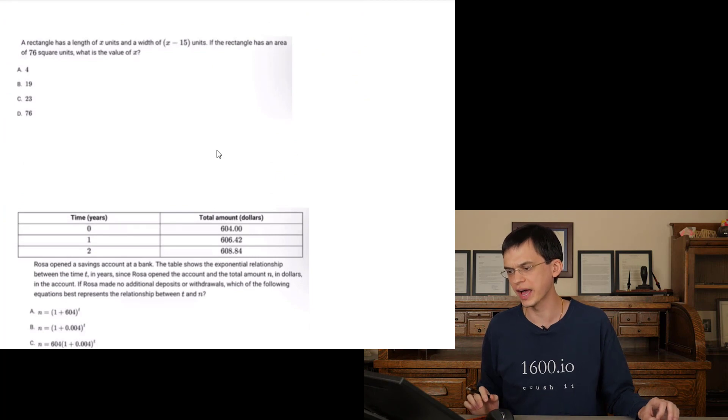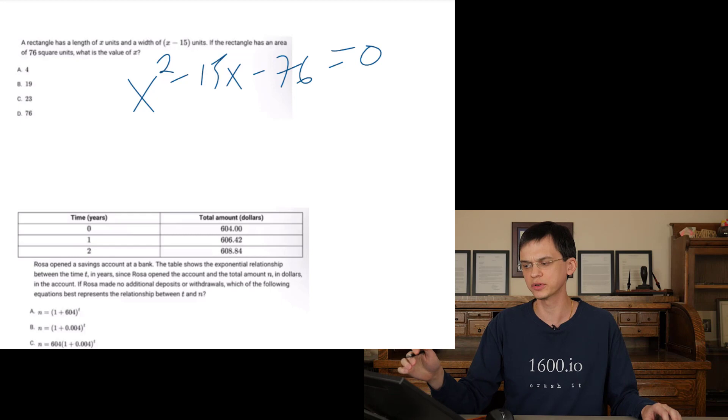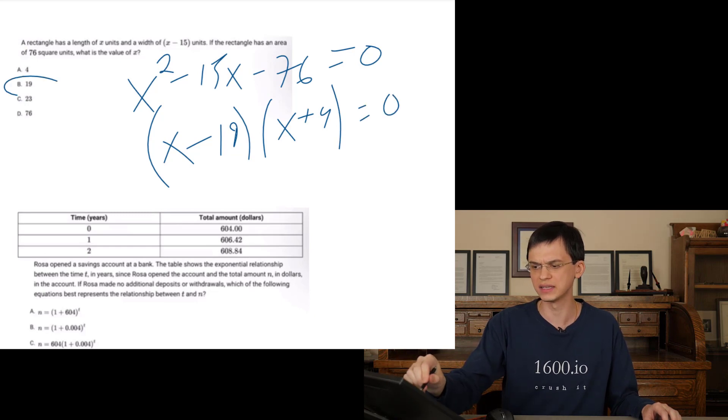A rectangle has a length of X units and a width of X plus 15. So we know that length times width equals 76 total square units. So X times X minus 15. So X squared minus 15X equals 76. Subtract 76 from both sides. Minus 76 equals zero. We can factor this two numbers. Multiply this negative 76, add up to negative 15X minus 19 and X plus 4. So what's the value of X that's positive? 19.